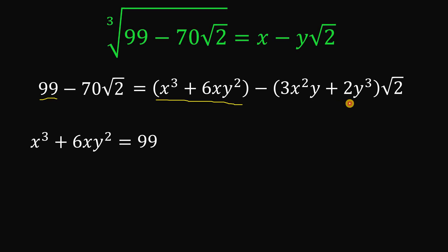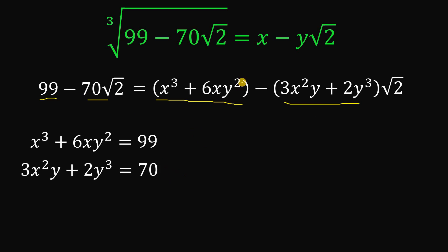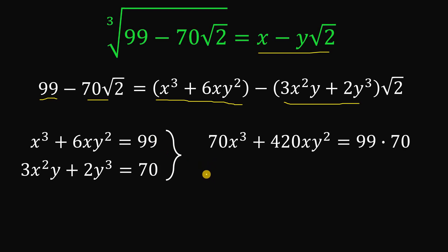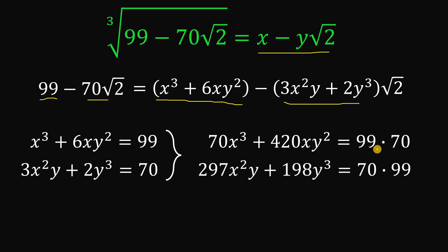And 3x²y + 2y³ = 70. Using these two equations, our goal is to solve for x and y. One strategy is to make the constants the same so that when we subtract the equations we get zero on the right-hand side. So we multiply the first equation by 70 and the second equation by 99 — note that 99 × 70 equals 70 × 99.